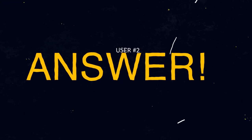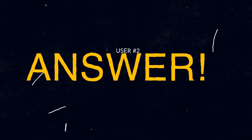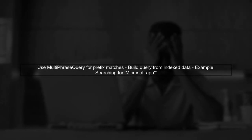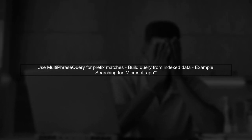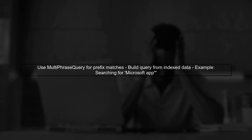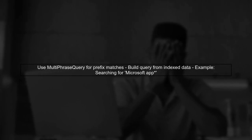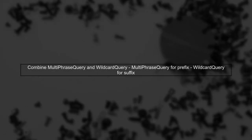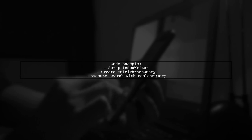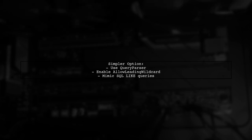Let's now look at another user-suggested answer. To match entire sentences with spaces in Lucene, consider using the multi-phrase query. This allows you to build a query based on index data for prefix matches. You can combine multi-phrase query with wildcard query for suffix matches, but be aware of performance implications. Here's a code example that demonstrates how to set up the queries and execute a search in Lucene. If this seems complex, you can use Query Parser with allow leading wildcard for a simpler SQL-like query approach.